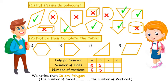Polygon C: Number of sides — 1, 2, 3 — it has 3 sides. Number of vertices — 1, 2, 3. Polygon D: Number of sides — 1, 2, 3, 4. Number of vertices — 1, 2, 3, 4. That means the number of sides in any polygon equals the number of vertices.